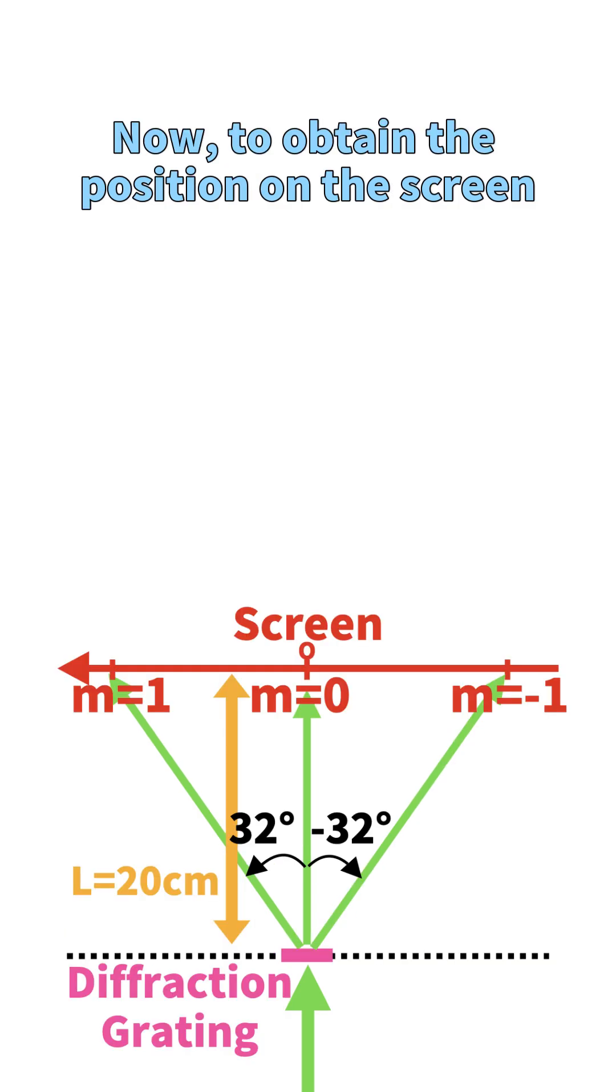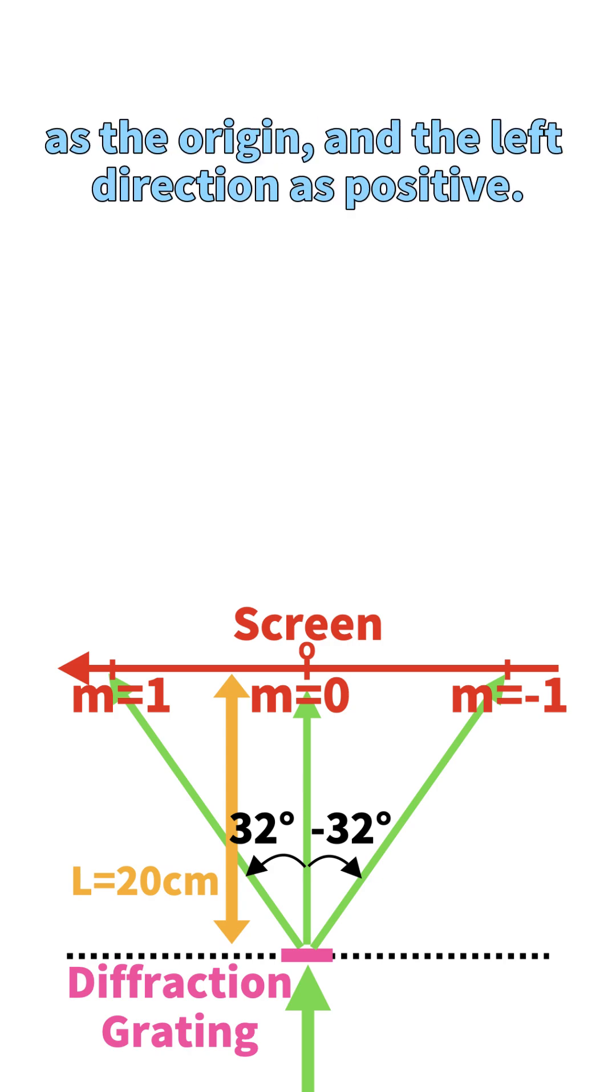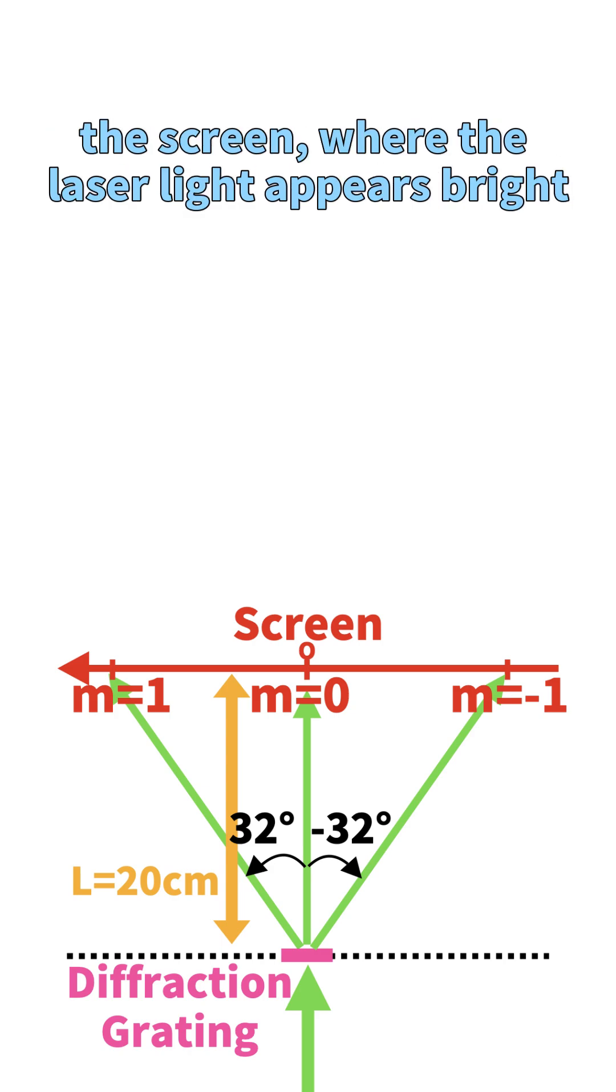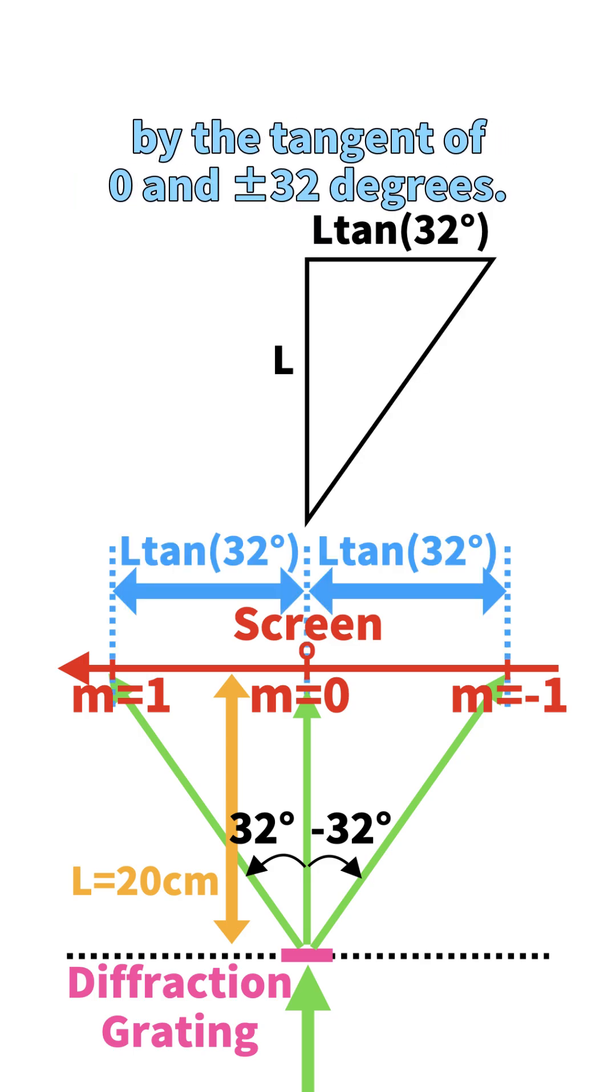Now, to obtain the position on the screen from these angles, we take the front of the diffraction grating as the origin, and the left direction as positive. We calculate the theoretical positions on the screen where the laser light appears bright by multiplying the screen distance by the tangent of 0° and ±32°. The result is 0 and approximately ±12.6 centimeters.